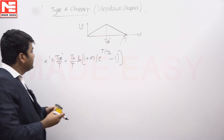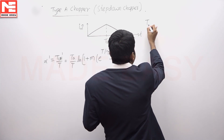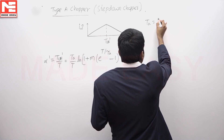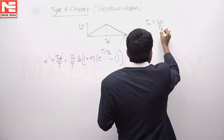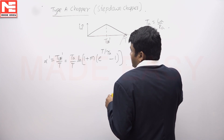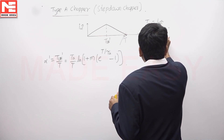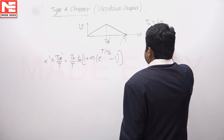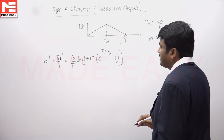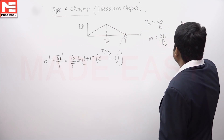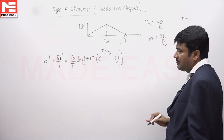In this equation, T_A means L_A by R_A, and m means it is the ratio of E_b by V_s. T is the time period.